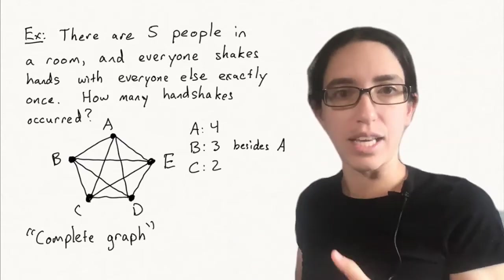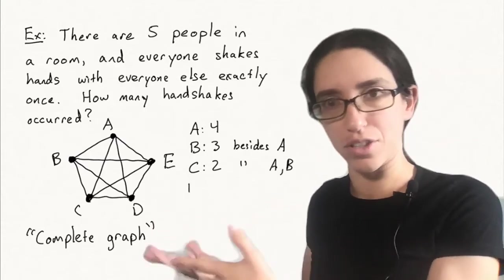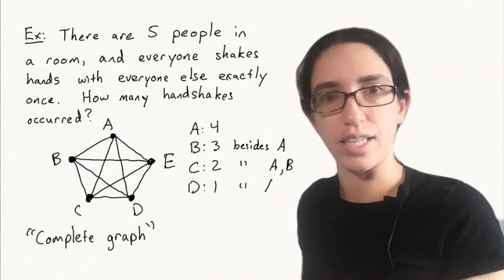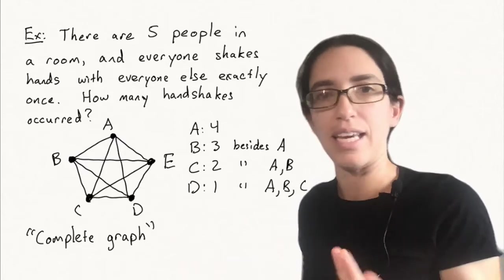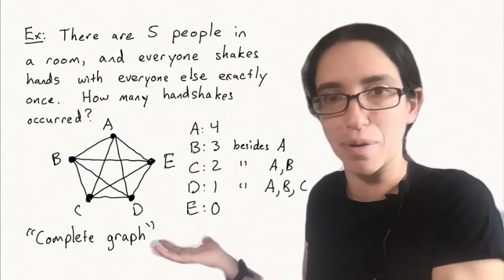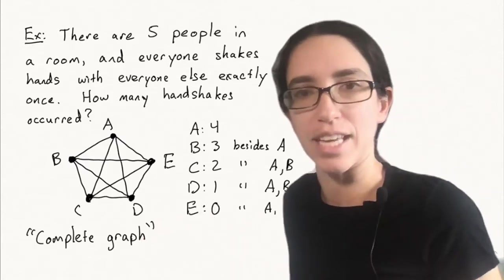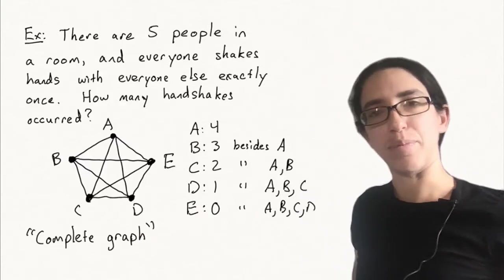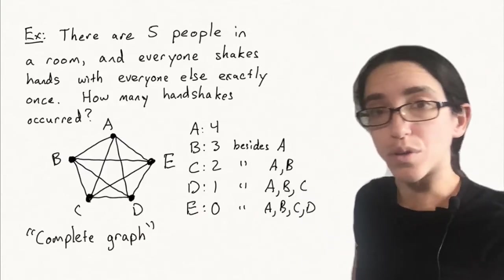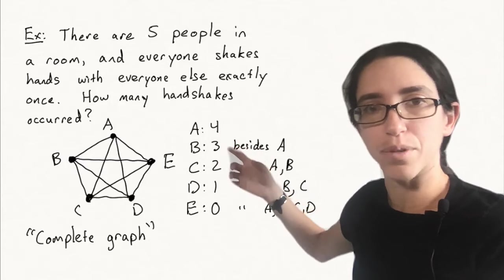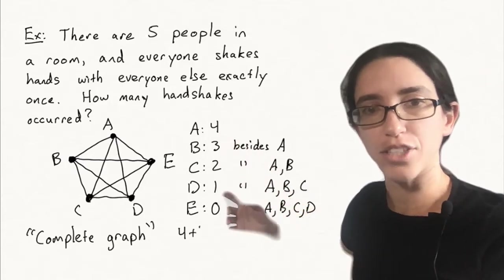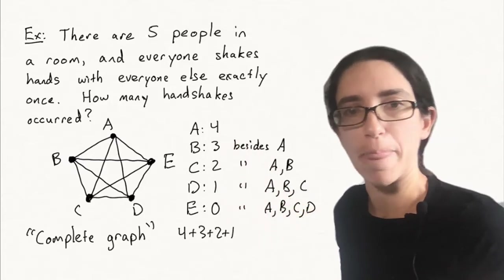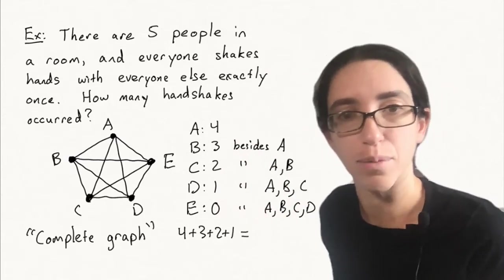Then C contributes two more handshakes besides the ones that already shook with A and B. And D contributes one more. And finally, E has now at this point shaken hands with everybody. So they don't have to shake hands with anybody else besides A, B, C, and D. So in total, we get four plus three plus two plus one handshakes plus zero. And that is a triangular number. That's the fourth triangular number.